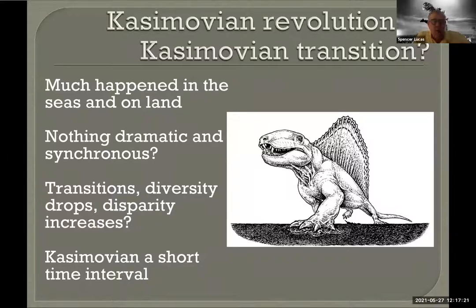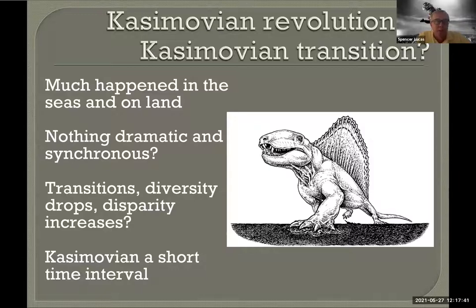The question I would ask is: obviously we know a lot happened on land and sea, but it doesn't look like there was anything big and synchronous either on land or in the sea — there's a lot of diachrony. The Casimovian is a short piece of geologic time — the shortest Carboniferous stage — and could it be that some of this is being biased by a lack of rock record relative to other time periods? That's something we really need to keep in mind.